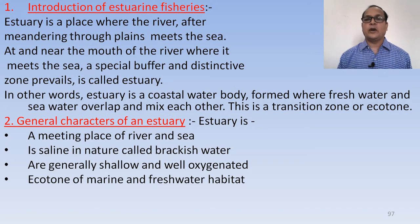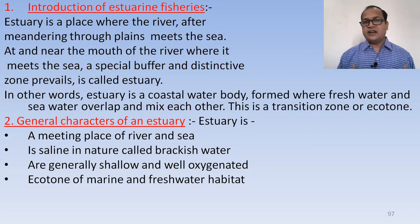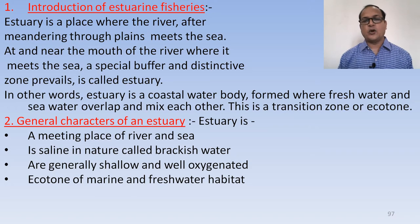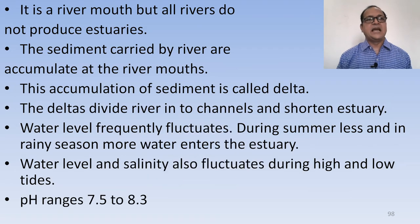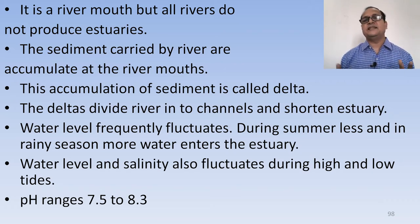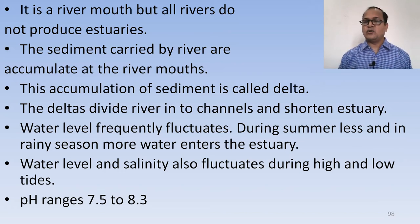This is the transition zone or ecotone for the animal kingdom. General characters of an estuary: An estuary is a meeting place of river and sea. It is saline in nature and called brackish water. Estuaries are generally shallow and well-oxygenated. Estuaries are ecotones of marine and fresh water habitat. It is a river mouth, but all rivers do not produce estuaries. The sediment carried by rivers accumulates at the river mouth, and this accumulation is called a delta. The deltas divide rivers into channels and shorten the estuary.